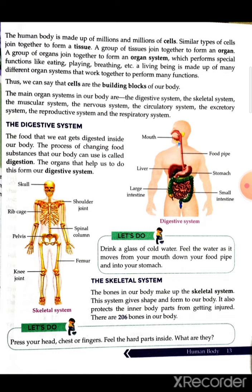The human body is made up of millions and millions of cells. Please underline the first line of chapter 2, page 30: 'Human bodies are made up of millions of cells.' Similar types of cells join together to form a tissue — underline this also. All words highlighted in bold black font are important words; you must underline those sentences.